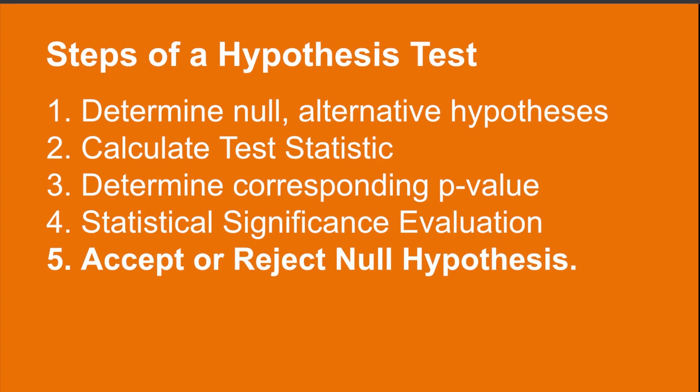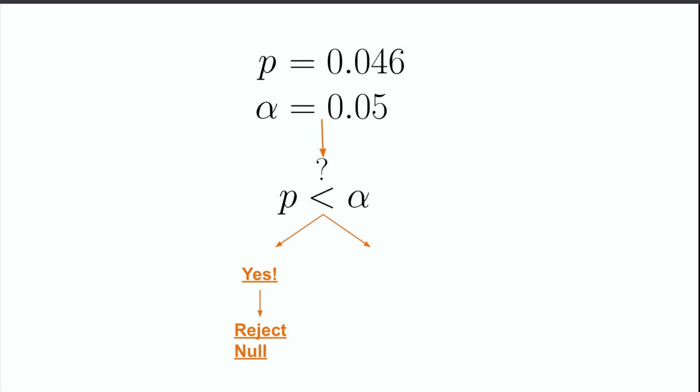This brings us to our last step where, during the comparison, we either accept or reject the null hypothesis. When we ask the question of whether the p-value is less than alpha, we can either get a yes or a no answer. If the answer is yes, the p-value is less than the significance level, then we reject the null hypothesis, and we say that we would not observe such an event by random chance. But if our calculated p-value is larger than our significance level, then we say our observation might just be a fluke, and we have to accept the null hypothesis.